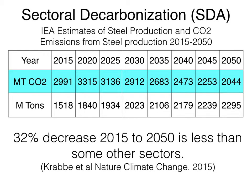Notice that the SDA approach builds in growth estimates in terms of millions of tons of steel produced — that's the white line just below the blue line in the table. Moreover, if you look at the 2020 emissions, they're actually growing, not declining. So there can be big differences in the assumptions and results of these two sectoral approaches.